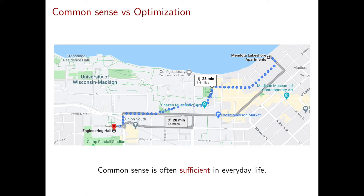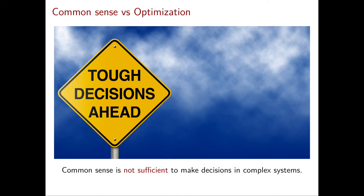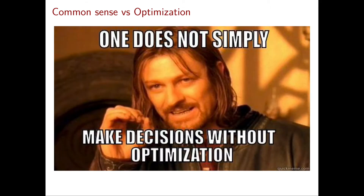Common sense is often sufficient in everyday life. However, common sense is not sufficient to make decisions in complex systems. With complex systems, I mean optimization problems that are much more complicated than simply finding the shortest path. For these complex optimization problems, if you use common sense, often you will end up with a solution that is very, very far from optimal. Moreover, complex systems often arise in situations where there is a huge amount of money involved. Think about the optimization problems that Amazon has to solve in order to deliver to you what you have bought. You can easily imagine that a very little change in their logistics can end up saving them millions of dollars every year.